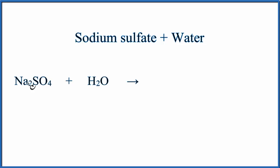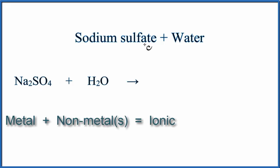When we look at Na2SO4, sodium is a metal, and then SO4, S and O are nonmetals. This is a group of nonmetals, and it's called a polyatomic ion, the sulfate ion.